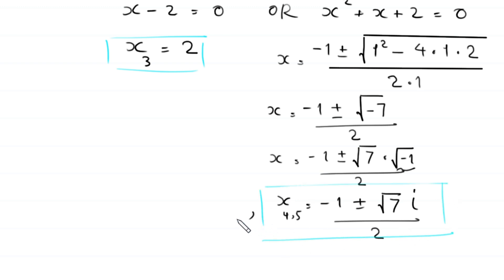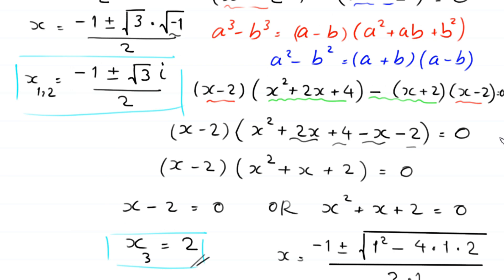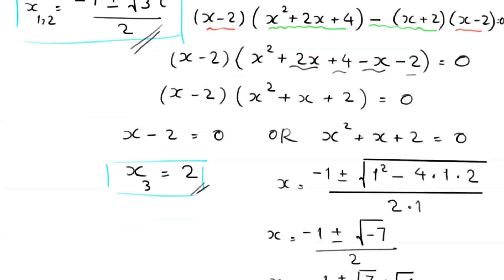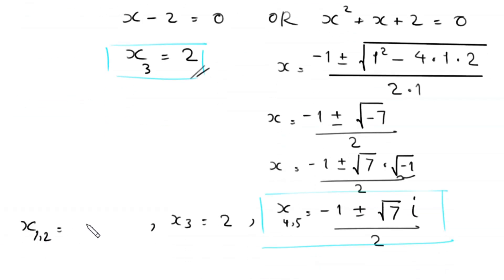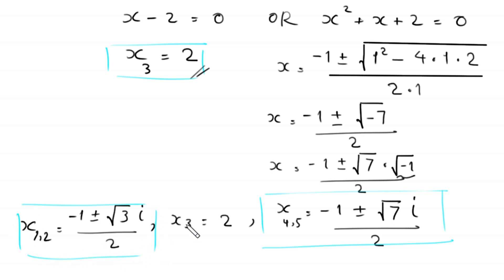In summary, we have five solutions. x₃ = 2; x₁ and x₂ = (-1 ± √3·i) / 2; and x₄ and x₅ = (-1 ± √7·i) / 2. So we have found all five solutions of this equation.